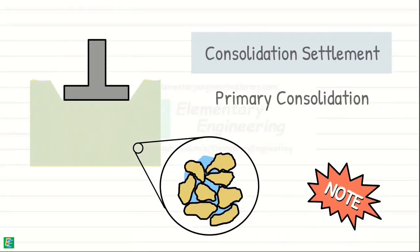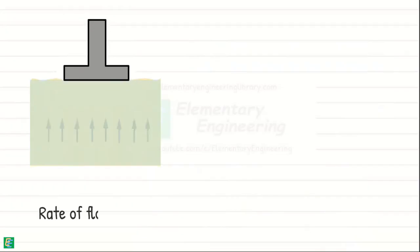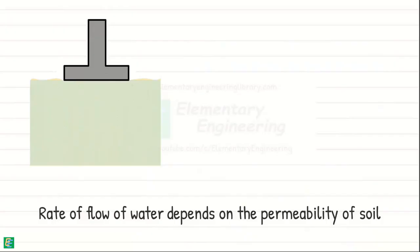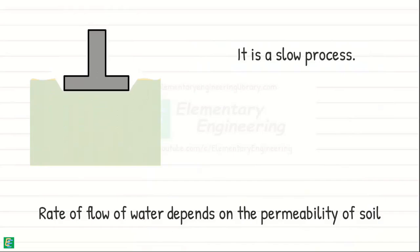It should be noted that this process only occurs in saturated soils and involves expulsion of water from voids over time. As the rate of flow of water in the soil depends upon the permeability of the soil, consolidation settlement is a slow process of soil compression and settlement that occurs over an extended period of time after the application of load.